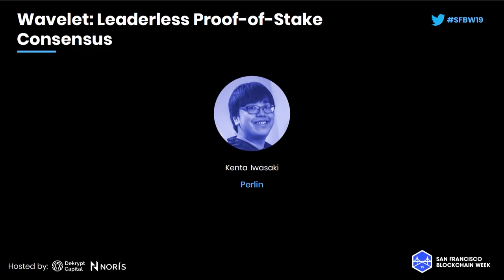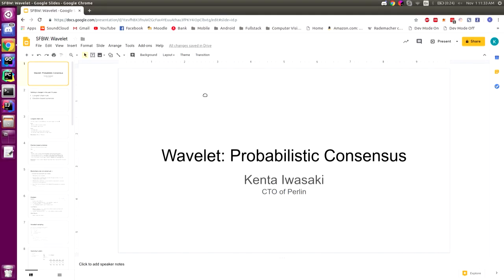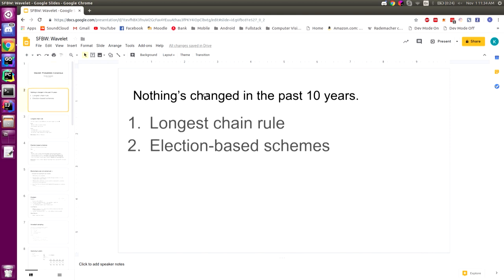Hi guys, I'm Kente Iwasaki, I'm the CD of Perlin. Today I'm going to be talking about a fresh new perspective on consensus protocols. The main reason is that there are quite a number of different flavors of consensus protocols out there, and we keep having all these new blockchains coming out, but nothing's really ever changed since the Bitcoin white paper came out about a decade ago.